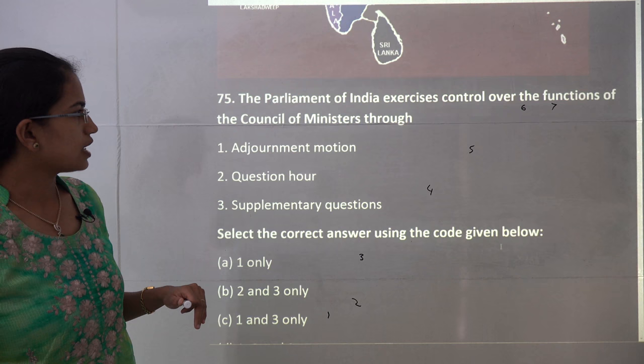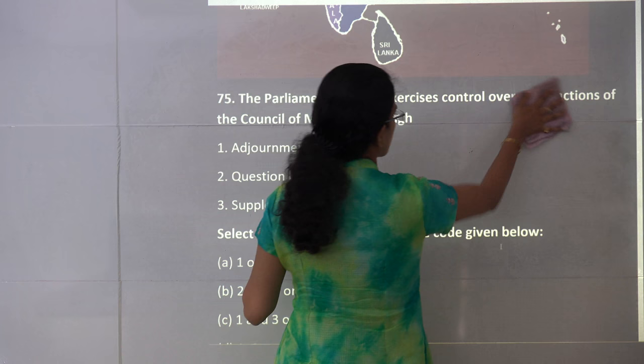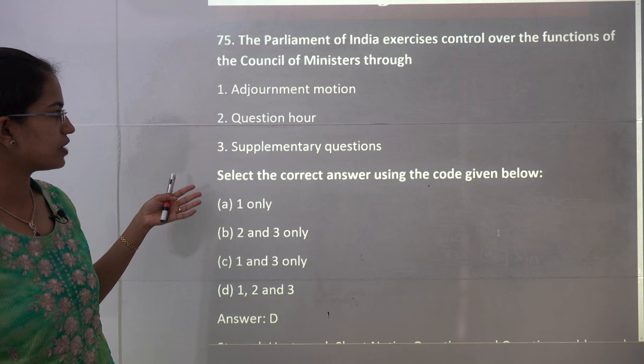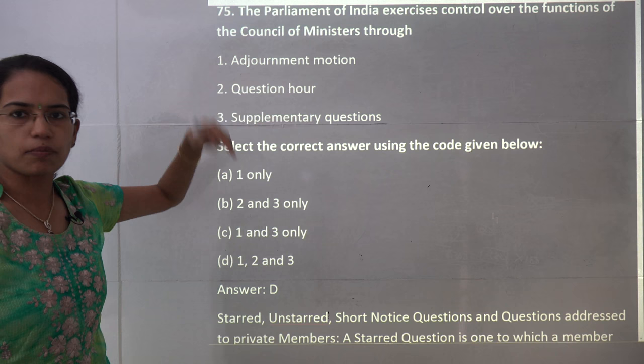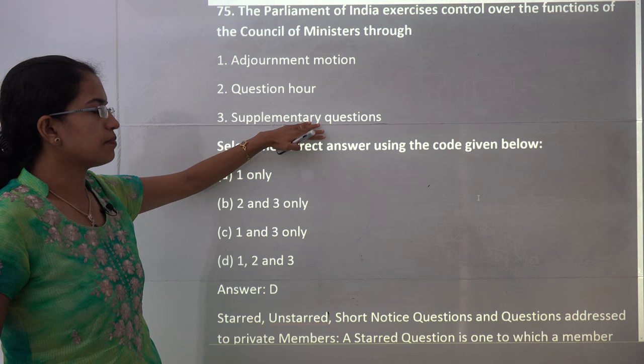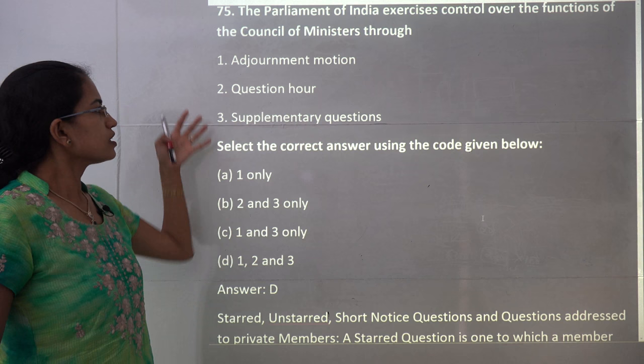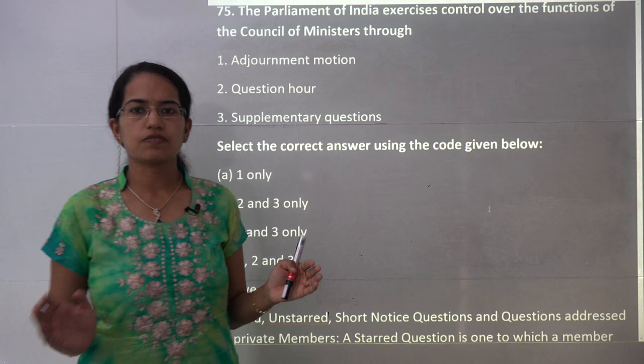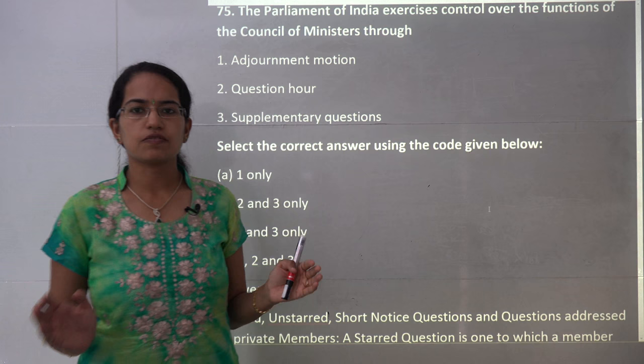The last question in this set asks how Parliament exercises control over the Council of Ministers. The answer is through all three mechanisms: adjournment motion, question hour, and supplementary questions. Question hour is a one-hour session, after which adjournment motions discuss urgent matters, and supplementary questions are asked based on starred questions. All three exercise control over the Council of Ministers. With this, we have covered the next 25 questions — we will cover the final set in the next video. Stay tuned and have a good day.